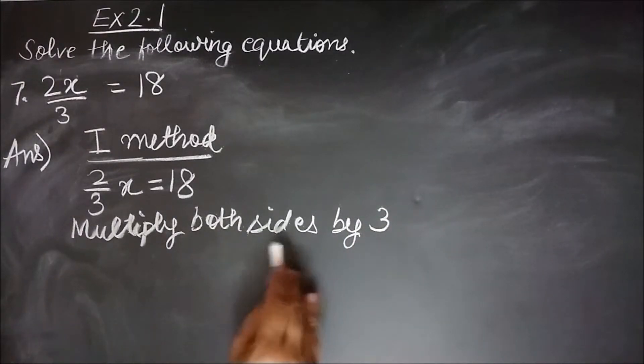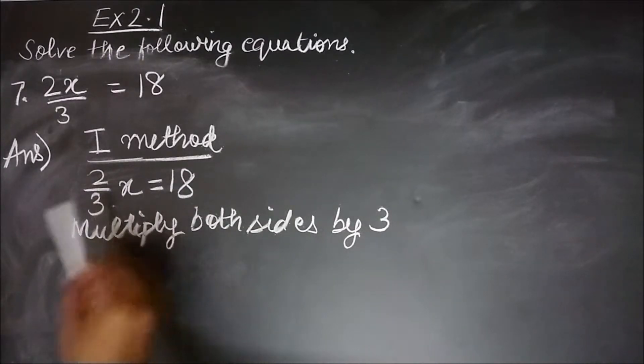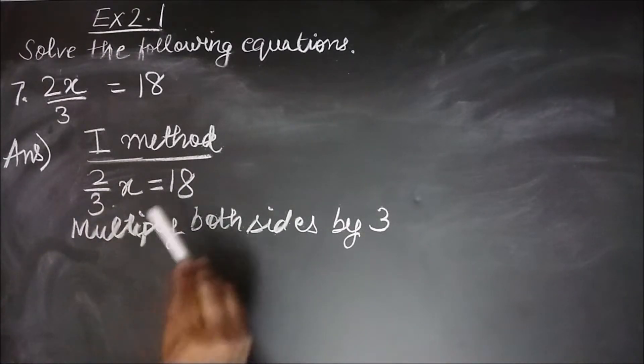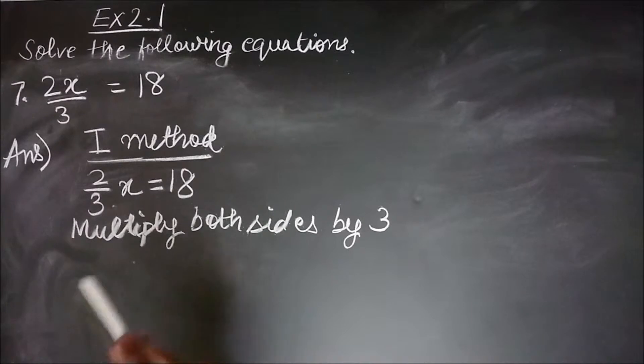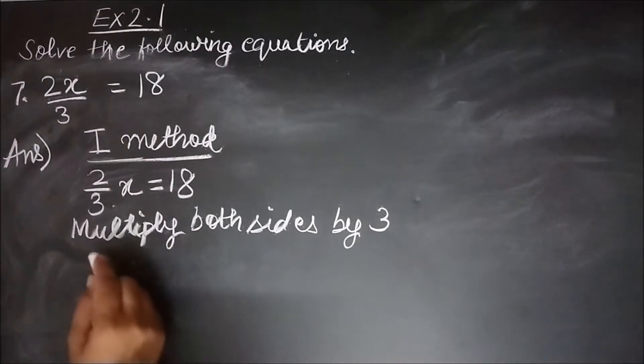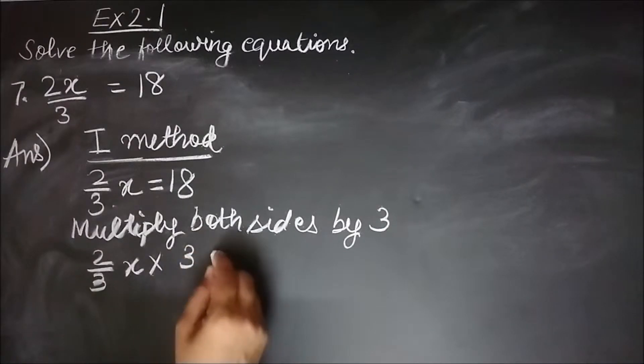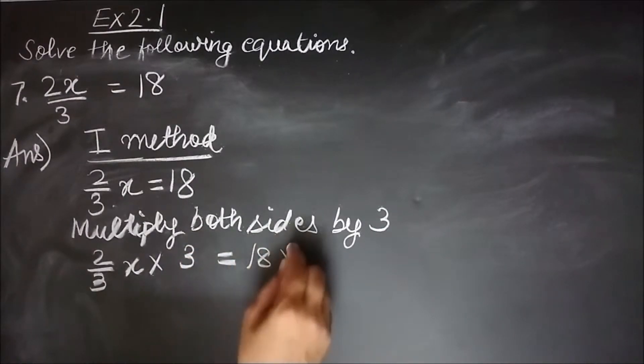Why both sides? So that my equality is maintained. If I multiply only left hand side by 3, my left hand side will increase more than my right hand side. So left hand side will not remain equal to the right hand side. Whatever operation we perform, we have to perform them on both the sides. 2 by 3x into 3 equal to 18 into 3.